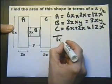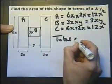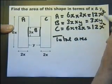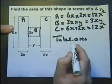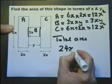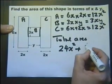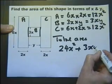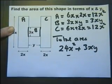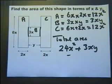So the total area, which is what we're after, is 12x² added to 12x² plus 3xy. So there's your answer. We have it in terms of x and y.